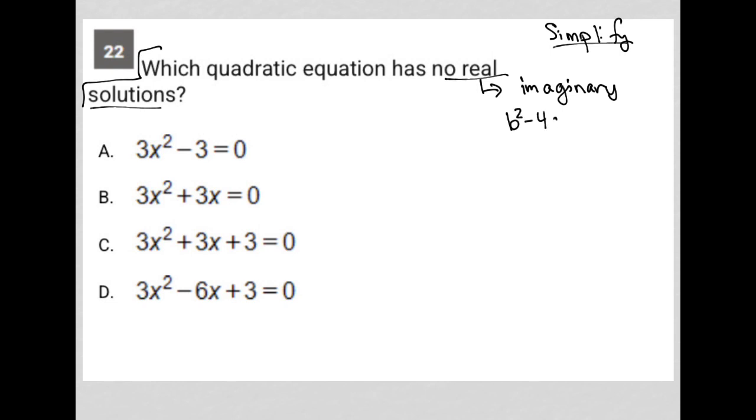If b squared minus 4ac is less than zero, that means the quadratic equation that b squared minus 4ac came from has imaginary solutions. That's what I'm going to use.